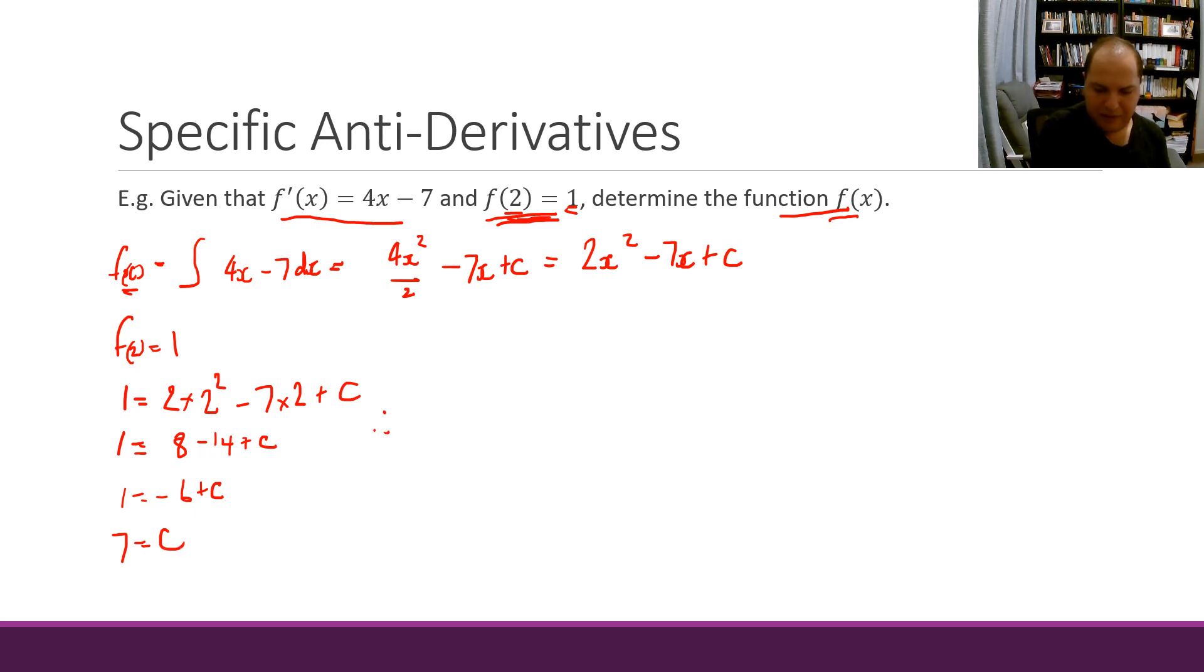Therefore my function is 2x squared minus 7x plus 7, and that's my specific antiderivative. That's the exact function I wanted to determine, which I could only get this time because I had some values I could substitute in and determine a value for c.